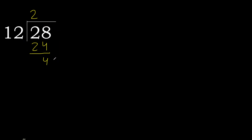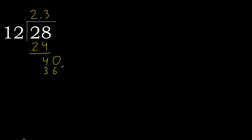There is no next digit, therefore complete. We complete with 0 here — place the decimal point. Now we have 40. 12 multiplied by 3 is 36, which is not greater than 40. 12 multiplied by 4 is 48, which is greater.